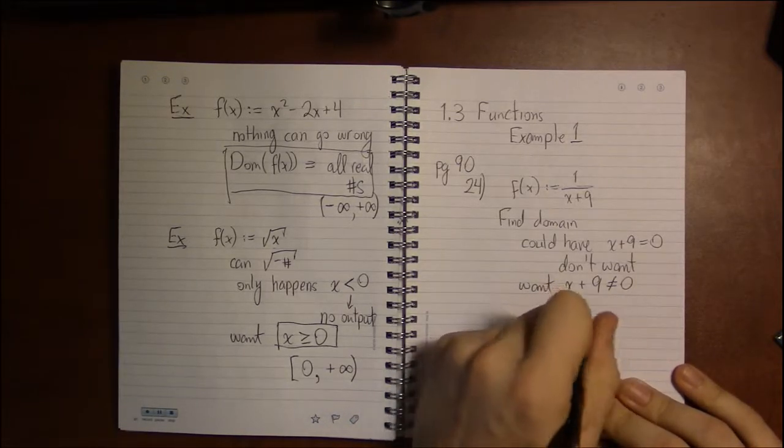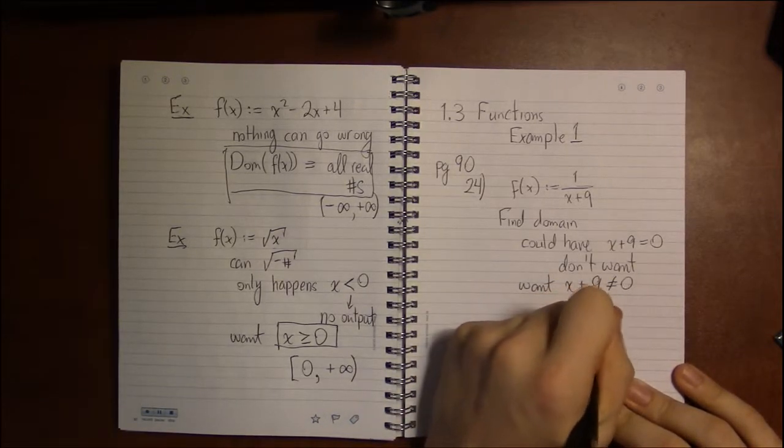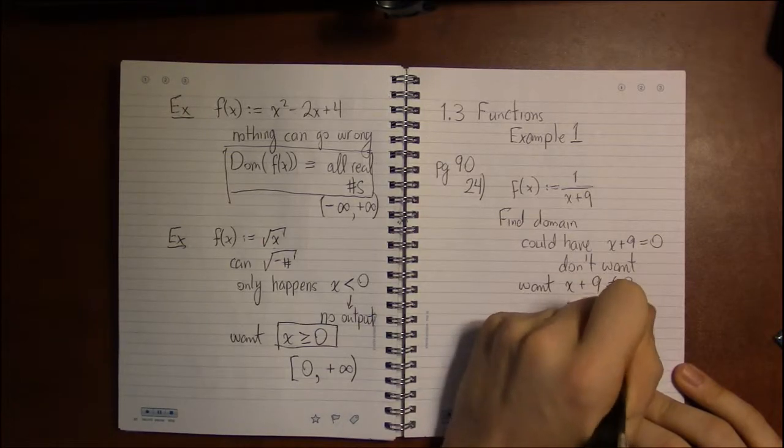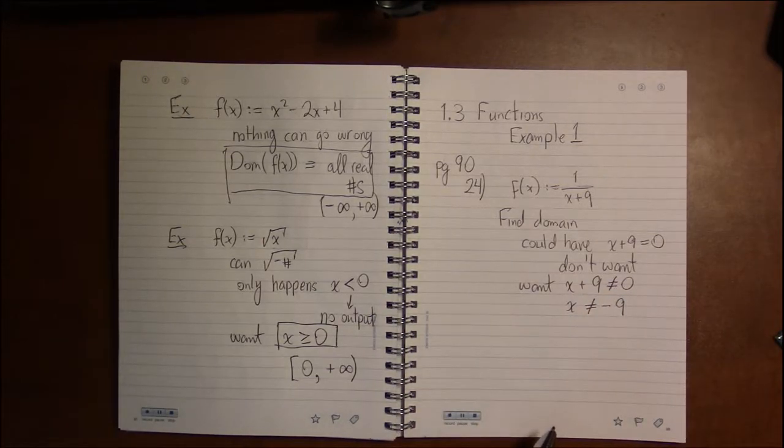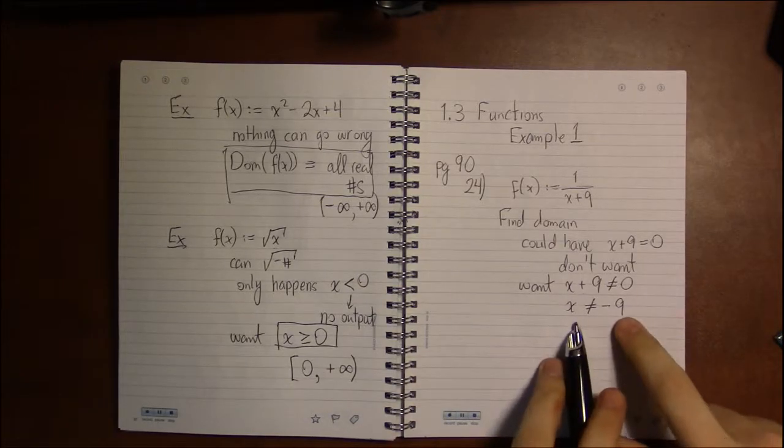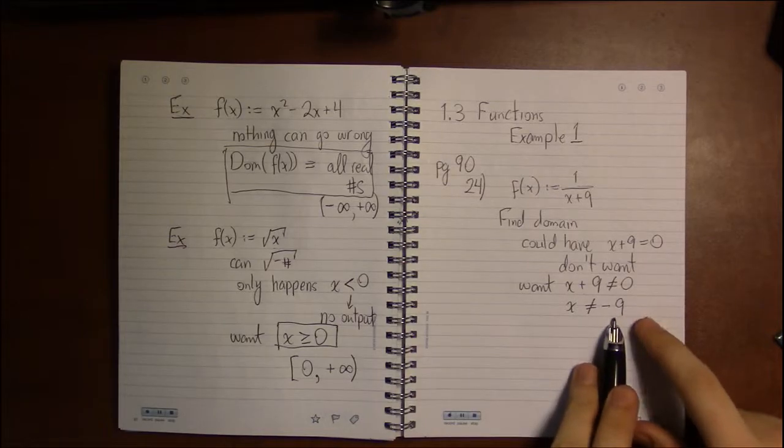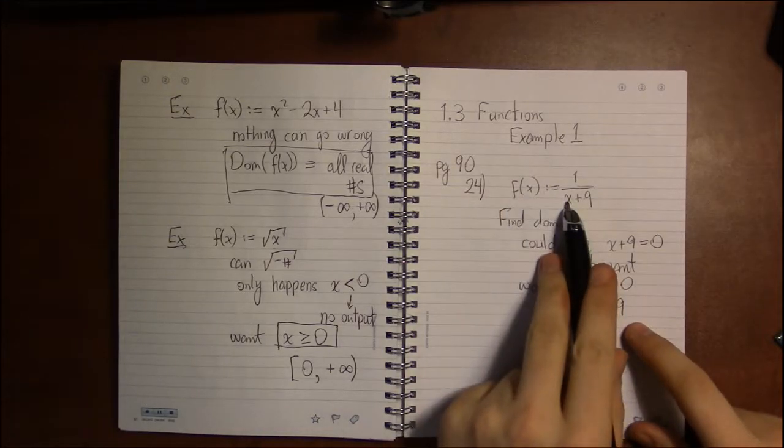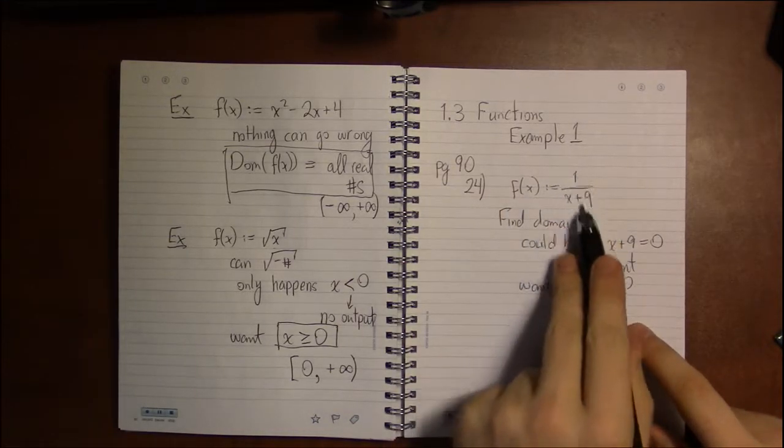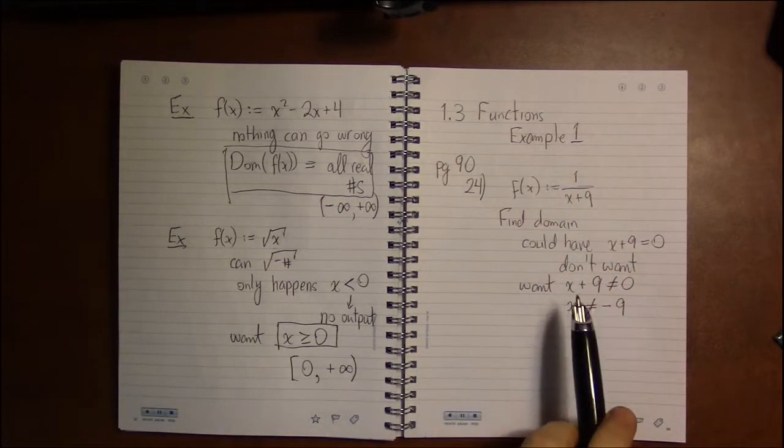Well if we subtract 9 from both sides, that means x cannot be minus 9, and that right there is the domain of this function. So long as x is not minus 9, you're not going to do anything bad and you will get a number for an output.